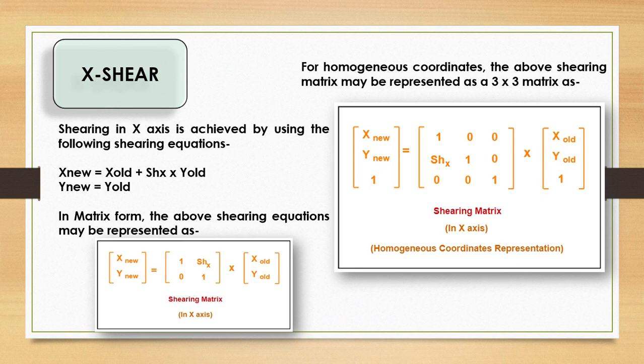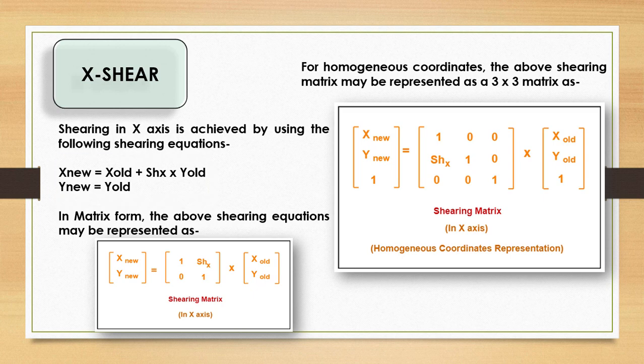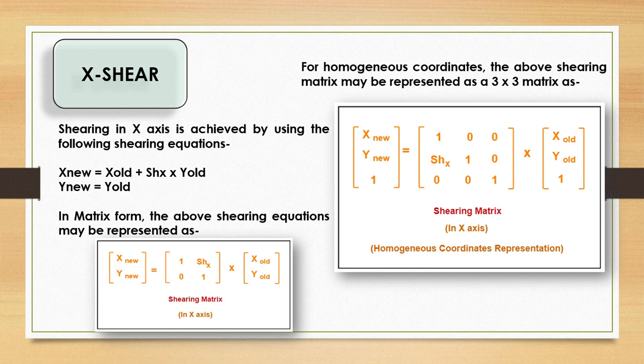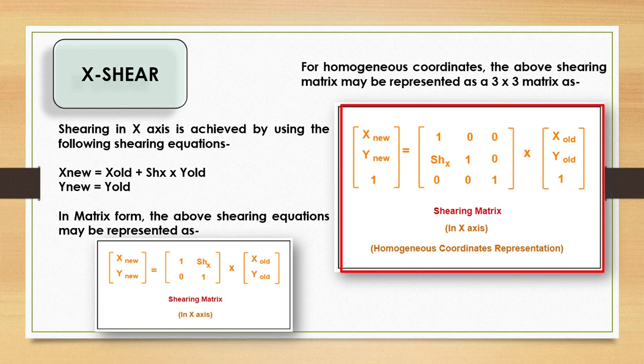Shearing in the X axis is achieved using the following equation: X_new = X_old + Sh_x × Y_old, and Y_new = Y_old. In matrix form: [X_new, Y_new, 1] = [1, Sh_x, 0; 0, 1, 0] × [X_old, Y_old]. For homogeneous coordinates, the shearing matrix is represented as a 3×3 matrix: [X_new, Y_new, 1] = [1, Sh_x, 0; 0, 1, 0; 0, 0, 1] × [X_old, Y_old, 1].